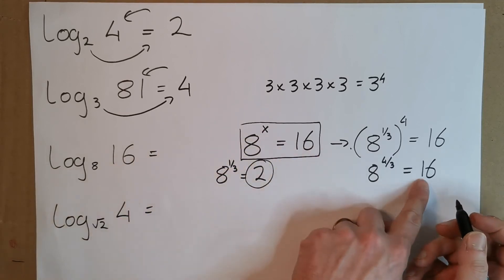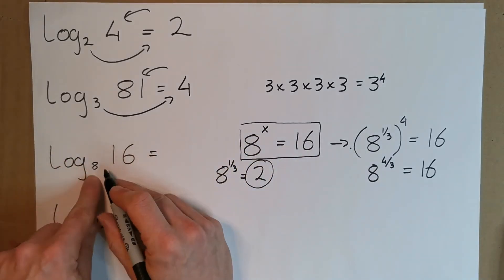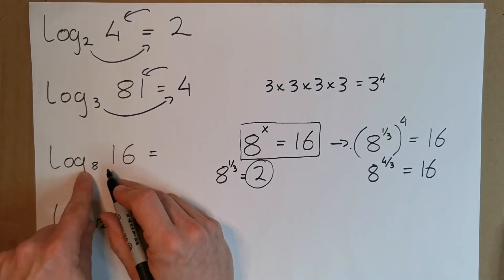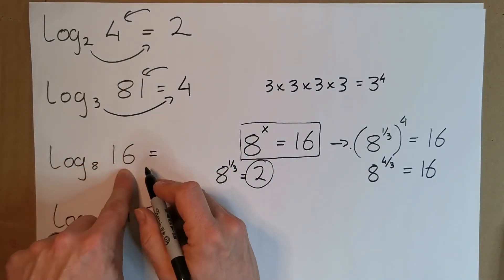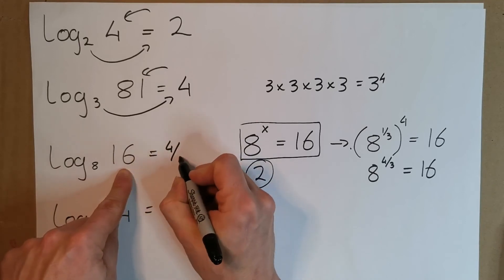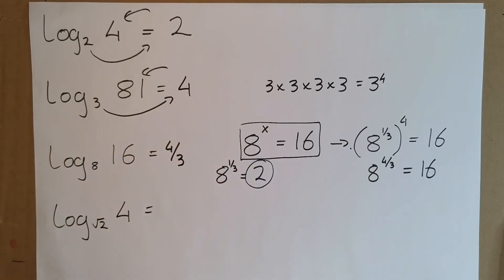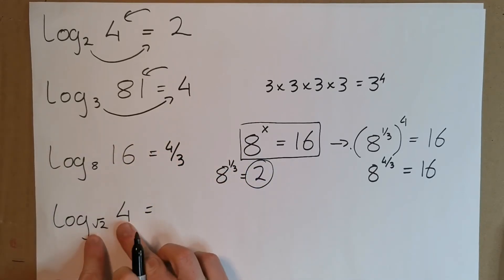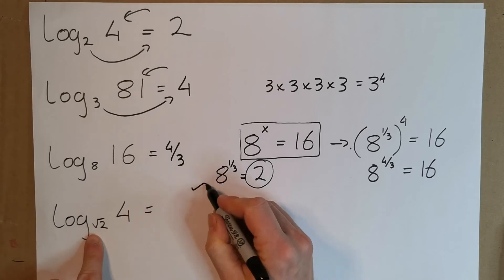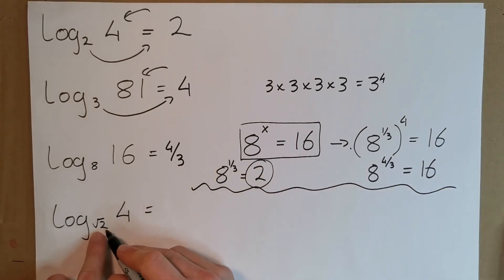So, 8 to the power of something is equal to 16. Therefore, the log base 8 of 16 is actually 4 over 3. You can verify this with your calculator.